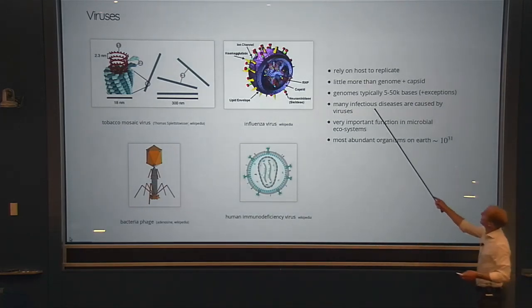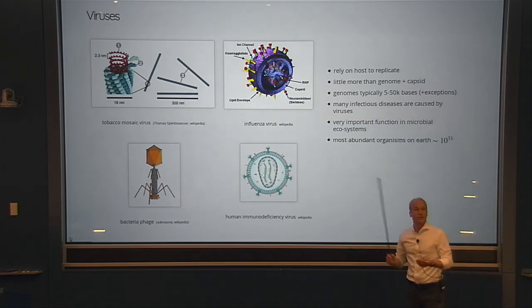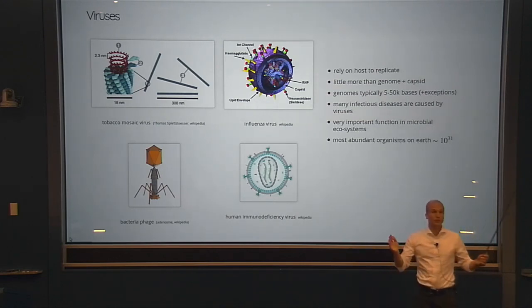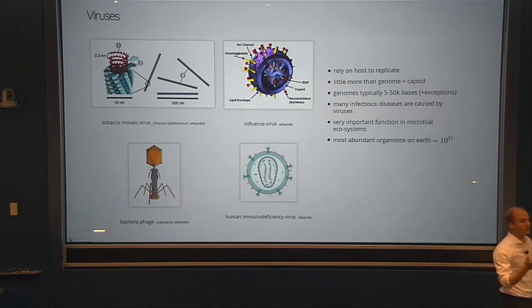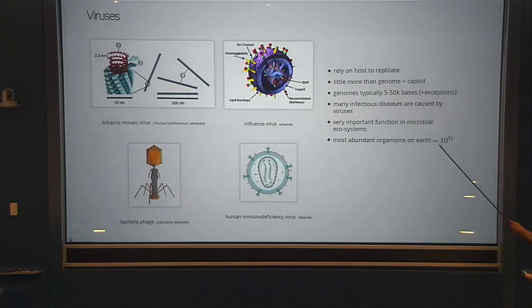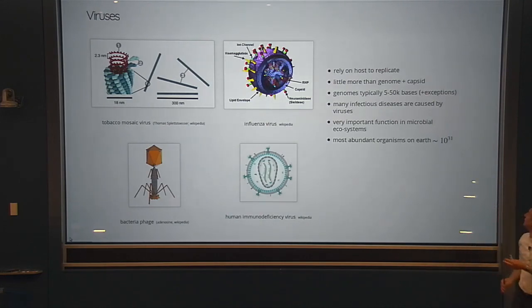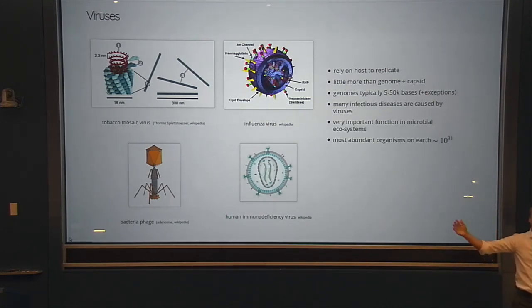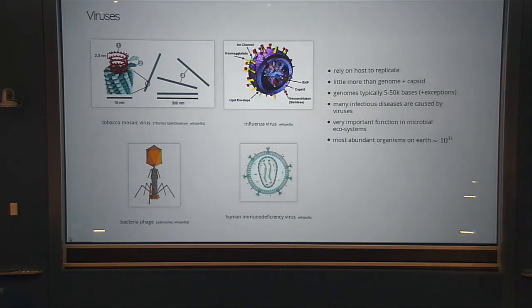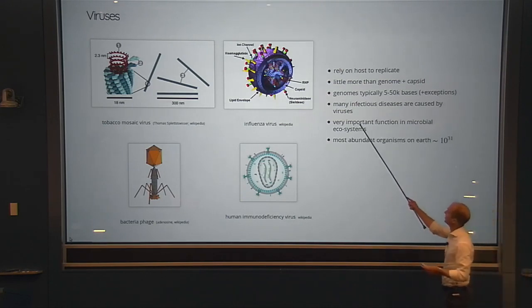These genomes that code for these instructions are pretty short — typically on the order of 10,000 bases, with quite a bit of variation, roughly 5,000 to 50,000 base pairs. There are some exceptions; some viruses are actually millions of base pairs long. But pretty much all viruses that we typically deal with are in this ballpark.